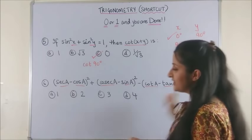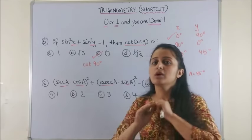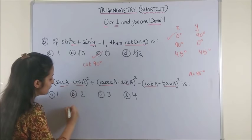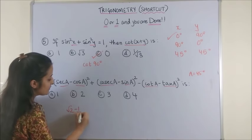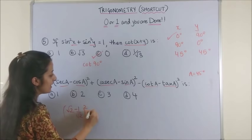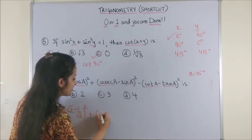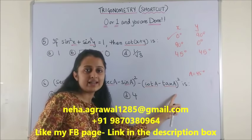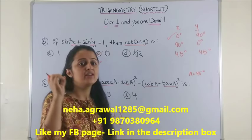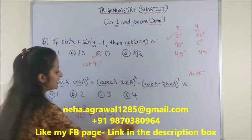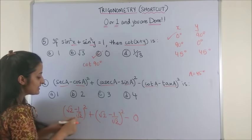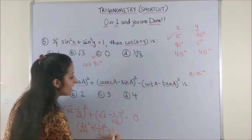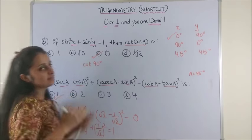So, this makes it secant 45 degrees that will give you a root 2, cos 45 degrees that gives you a 1 by root 2 whole square plus the same thing happens here. So, root 2 minus 1 by root 2 whole square and this one cot a minus tan a would be cot 45 minus tan 45 which is going to give you 1 minus 1, 0. So, you need not even write all that. This one if I take the LCM is 2 minus 1. So, that's 1 by root 2 whole square plus 1 by root 2 whole square and I get the answer of 1 very easily.